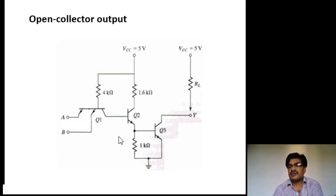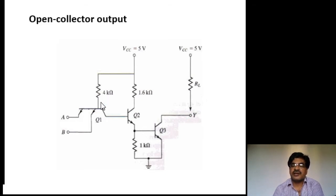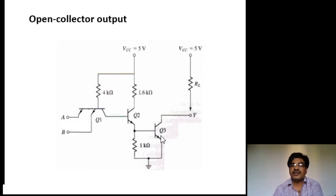To switch on Q2 and Q3, approximately 1.8 V is needed at the base of Q1: Vbe of Q3 is 0.6 V, plus Vbe of Q2 is 0.6 V, plus the base-to-collector voltage of Q1 is 0.6 V, totaling 1.8 V. But now we are getting only 0.9 V, which is not enough to switch on Q2 and Q3, so Q3 remains off — it is in open circuit.